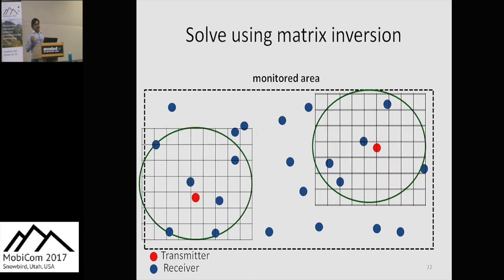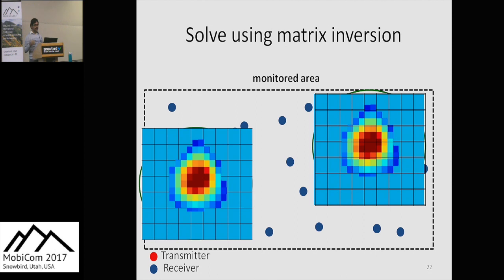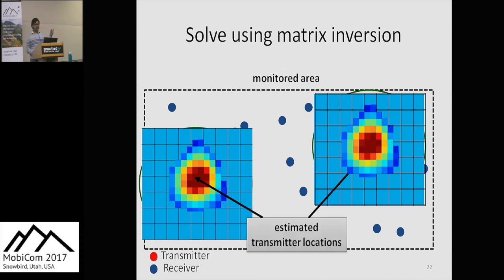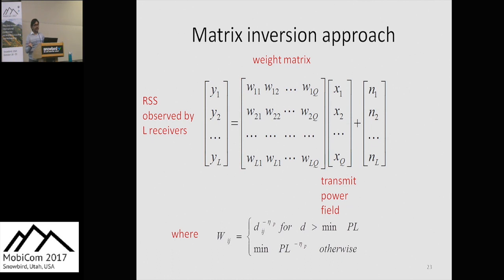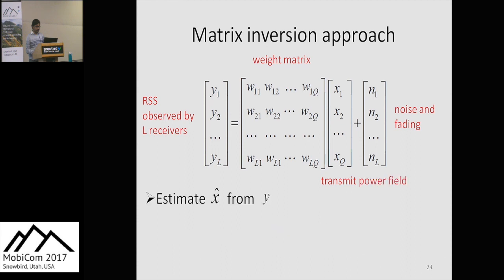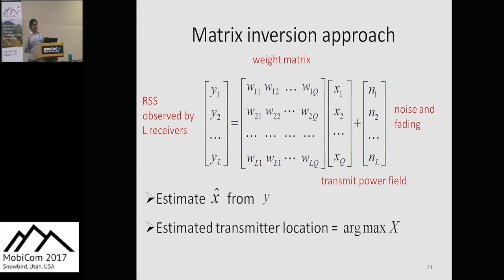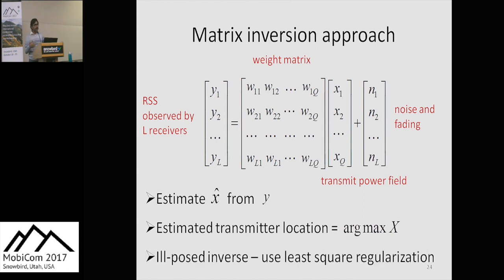For each single-source localization problem, we use a matrix inversion method which subdivides the area inside the circle into grids and tries to estimate the transmit power field from each box cell, deciding that the transmitter location is the box cell with maximum transmit power. This approach is governed by the matrix equation Y = WX + N, where Y is the received signal strength on L receivers, X is the transmit power field, W is the weight matrix, and N is a combination of noise and fading. We estimate the transmit power field X from the received signal strength Y and declare the transmitter location as the box cell with maximum transmit power. Since this inversion problem is ill-posed, we use least-square regularization.